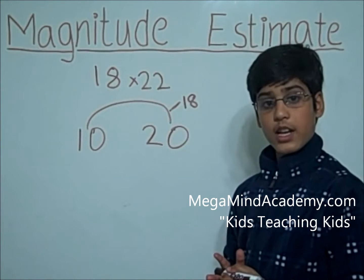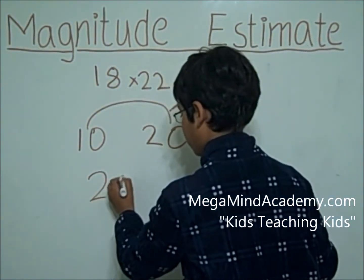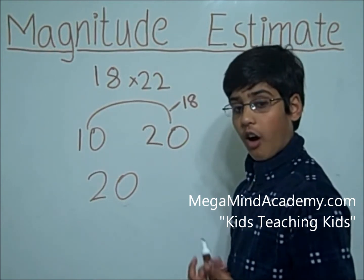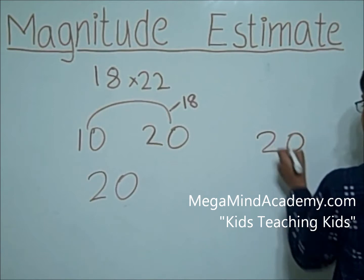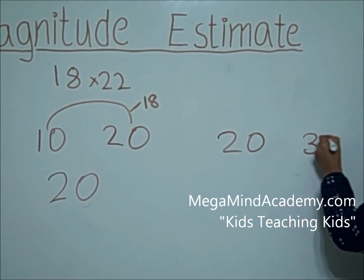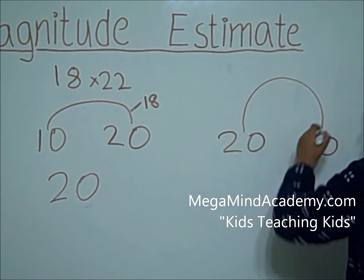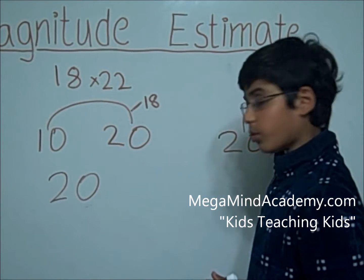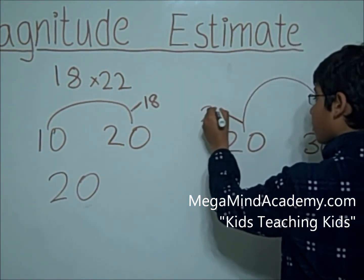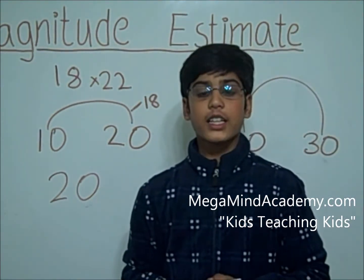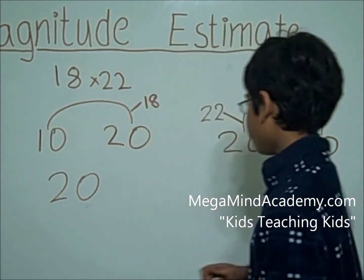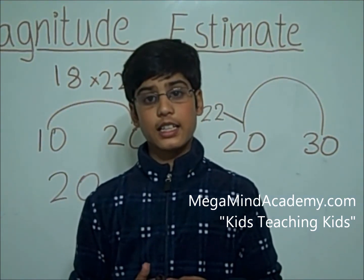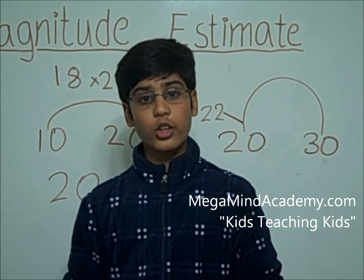So we're going to put down 20. Now let's round 22 to the nearest tens. 22 falls between 20 and 30. Let's draw the line. Where on this line would 22 about be? 22 would probably be right here. It is closer to 20 than to 30, so 22 rounded to the nearest tens is 20. We're going to put down 20.